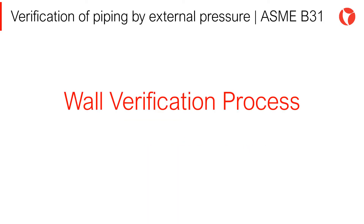Note that the word 'verification' has been used in the title: Wall Verification Process. It means that, unlike pipes which are designed for internal pressure, there is no single formula or unique design which fits the external pressure condition. This calculation process is iterative. The thickness of the pipe is only one part of the design. All the factors which affect the design are the length between lines of support, the use, size, and spacing of stiffening rings.